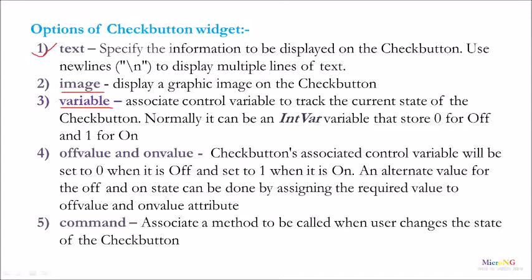The third option is Variable. It associates a control variable to track the current state of the CheckButton. Normally, it can be an IntVar variable that stores 0 for OFF and 1 for ON. The fourth option is OFF value and ON value. The CheckButton's associated control variable will be set to 0 when OFF and 1 when ON. An alternate value for the OFF and ON state can be assigned using the OFF value and ON value attributes.